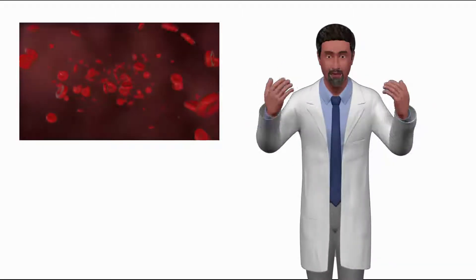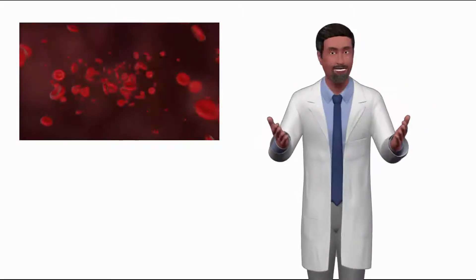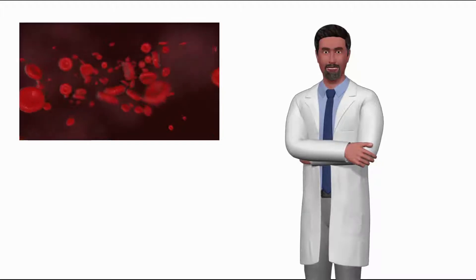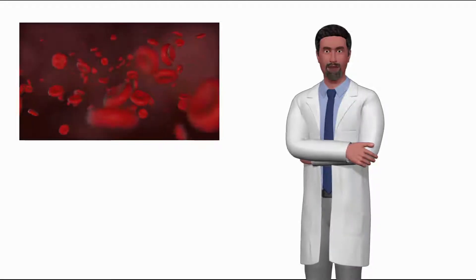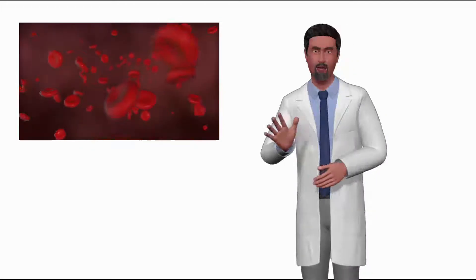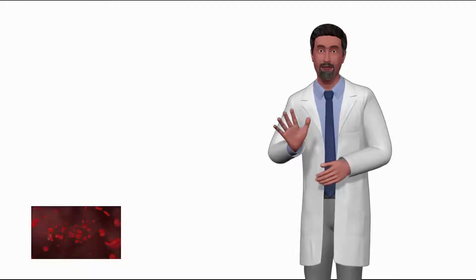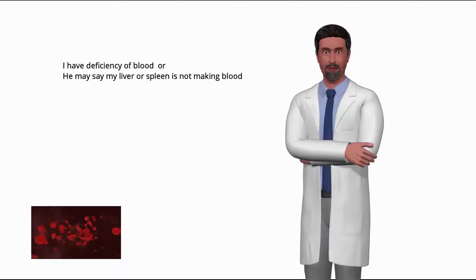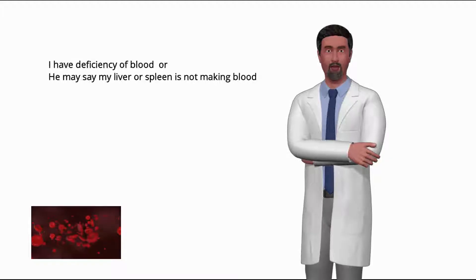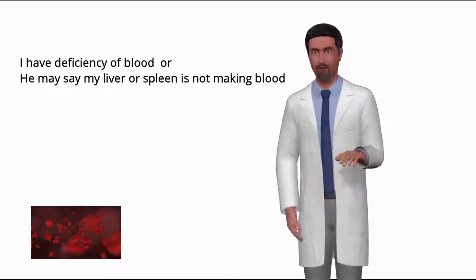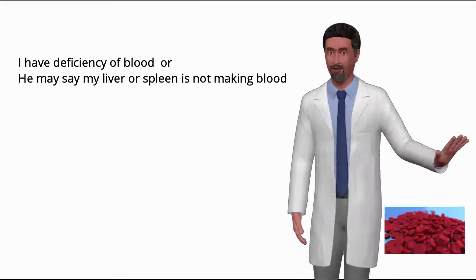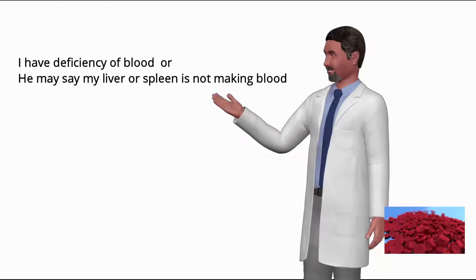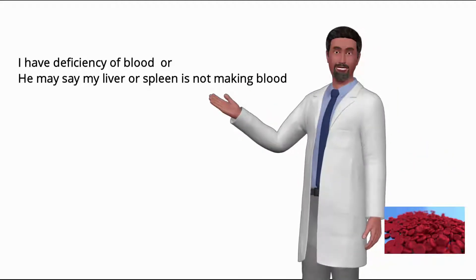Today we will talk about history taking of anemia in our region like Pakistan and India. When we start taking history from a patient who has anemia, usually the patient says 'I have deficiency of blood,' or they may say 'my liver or spleen is not making blood.' After listening to this, many medical students become confused and fail to proceed and take history properly.